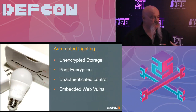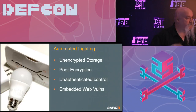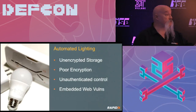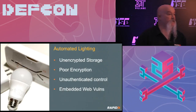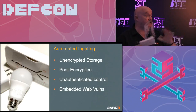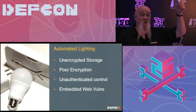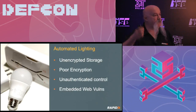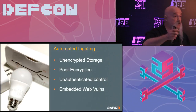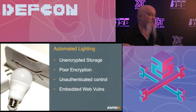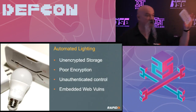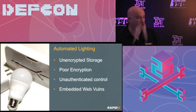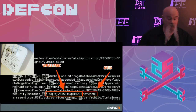Looking at automated lighting solutions, specifically the Sylvania Osram Lightify products. There are two pieces: the home user modules and the enterprise version used in businesses to manage building lighting. Things we found include unencrypted storage of information, poor encryption in communication, unauthenticated controls, and embedded web vulnerabilities. I set up the whole Lightify system and started looking at the mobile applications.